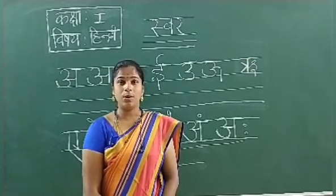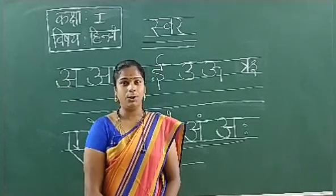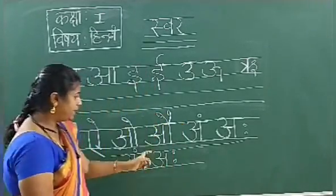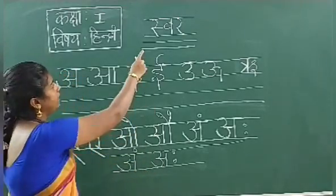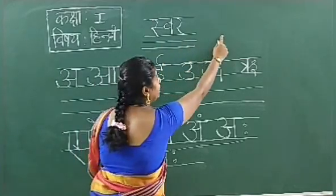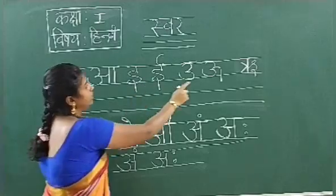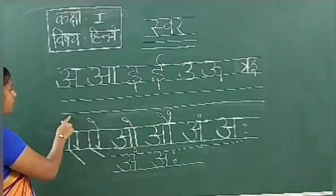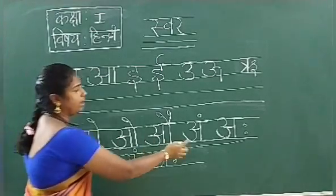Today you have to take one new Hindi classwork note and write Swer A to AH. While writing, you have to check up and down line want to touch. First, you have to write first Swer. Then date you have to write in the corner. A to RU you have to write. Last, you have to leave one line. Then A to AH want to write.